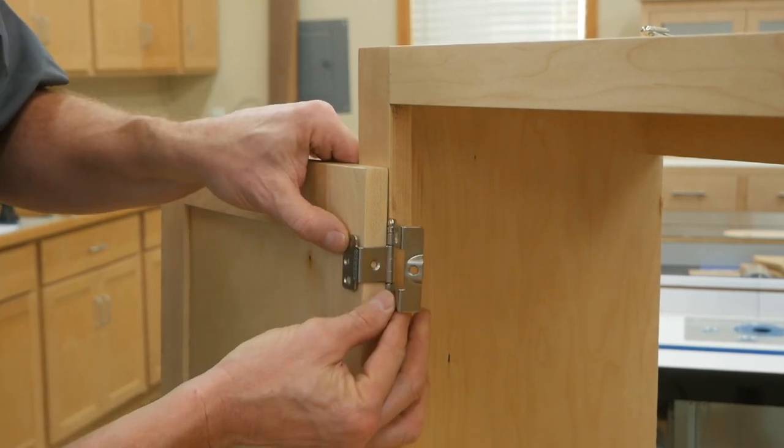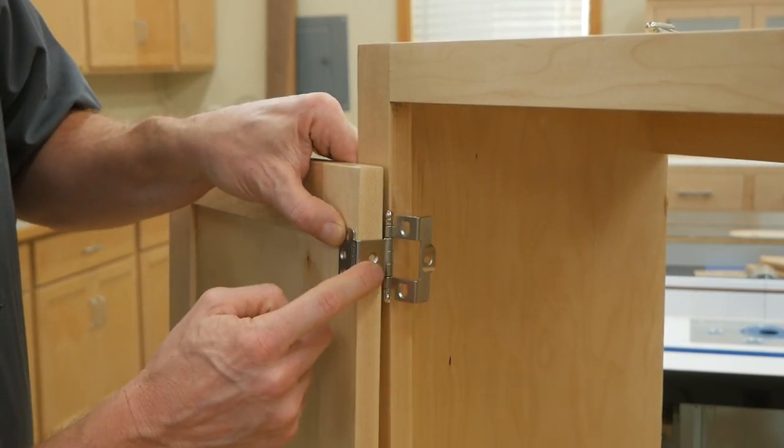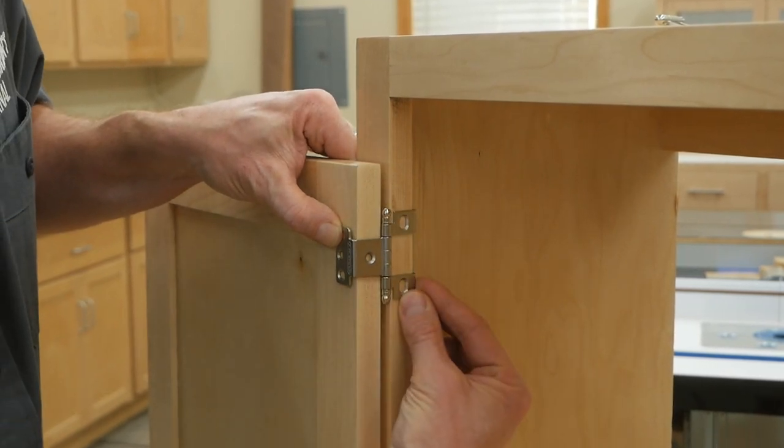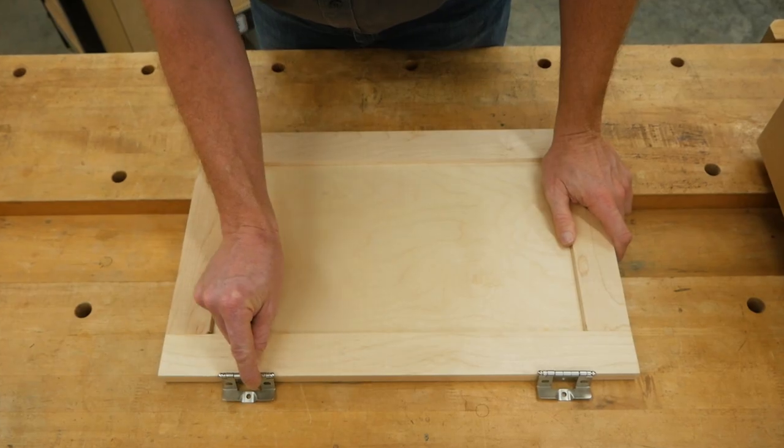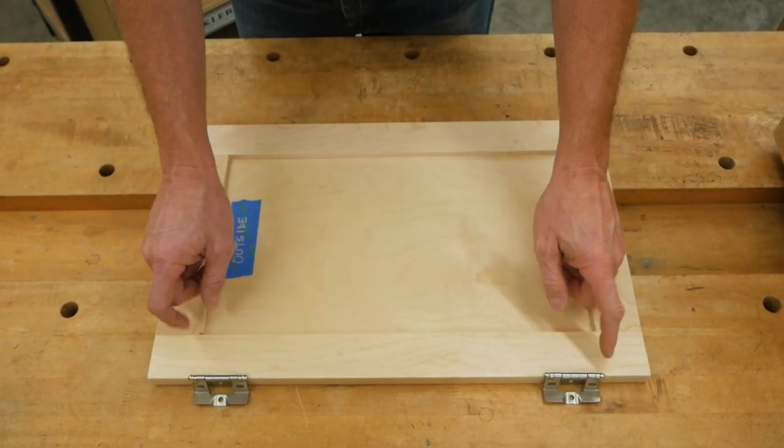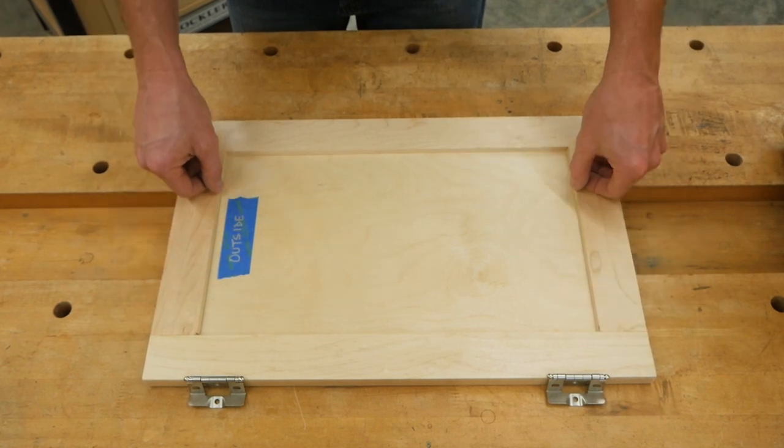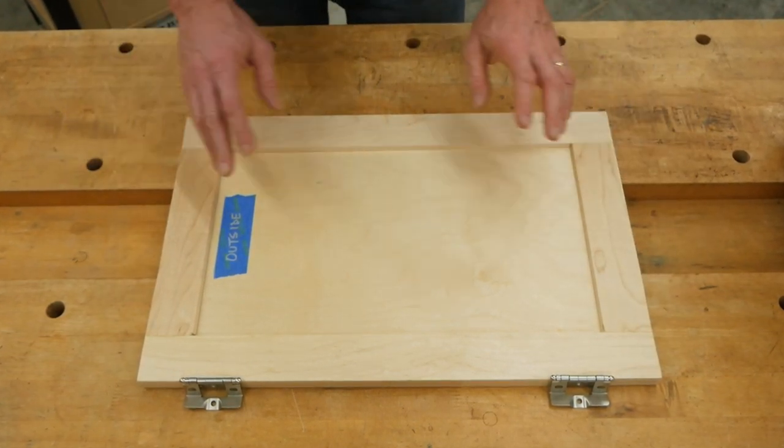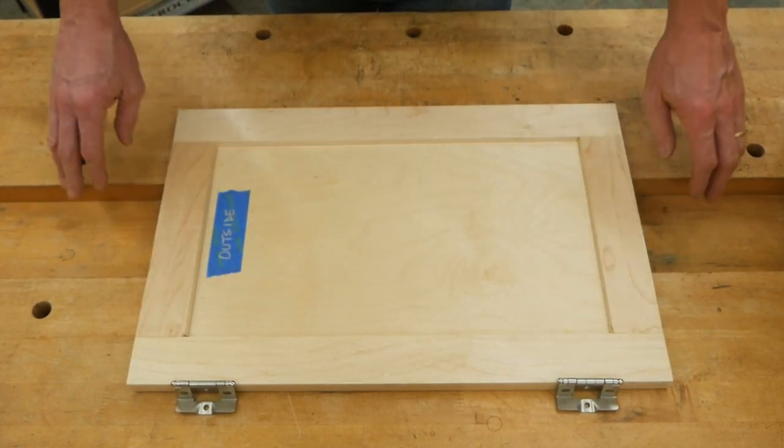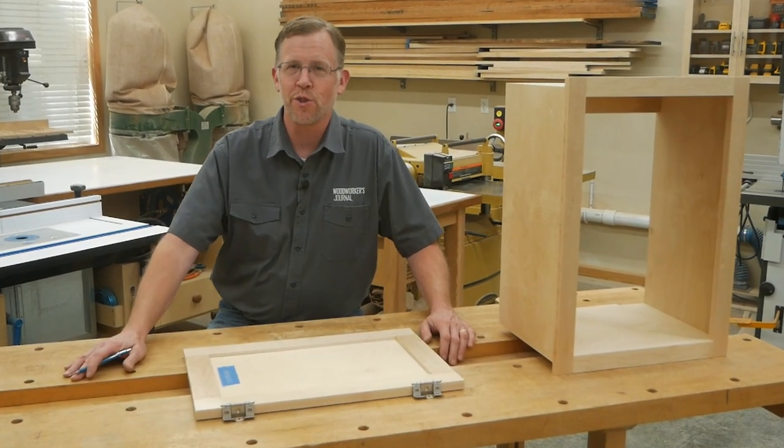This smaller hinge leaf mounts to the back and edge of the cabinet door, and this larger hinge leaf mounts to the edge of the face frame. I like to position hinges on cabinet doors so the outside ends of these knuckles line up with the inside edges of the top and bottom rails. This isn't a hard and fast rule, but it's fairly common practice and it looks good.